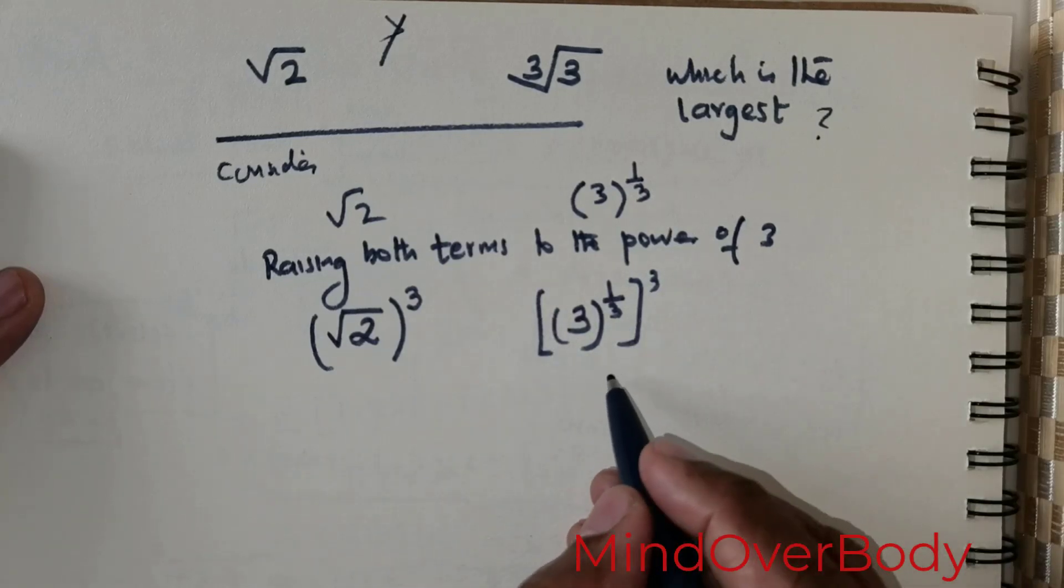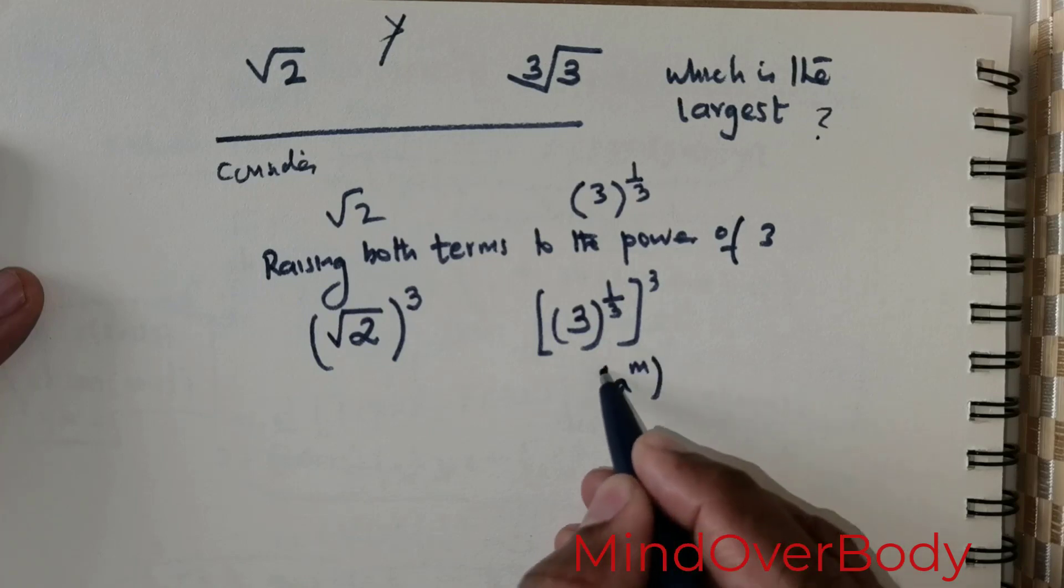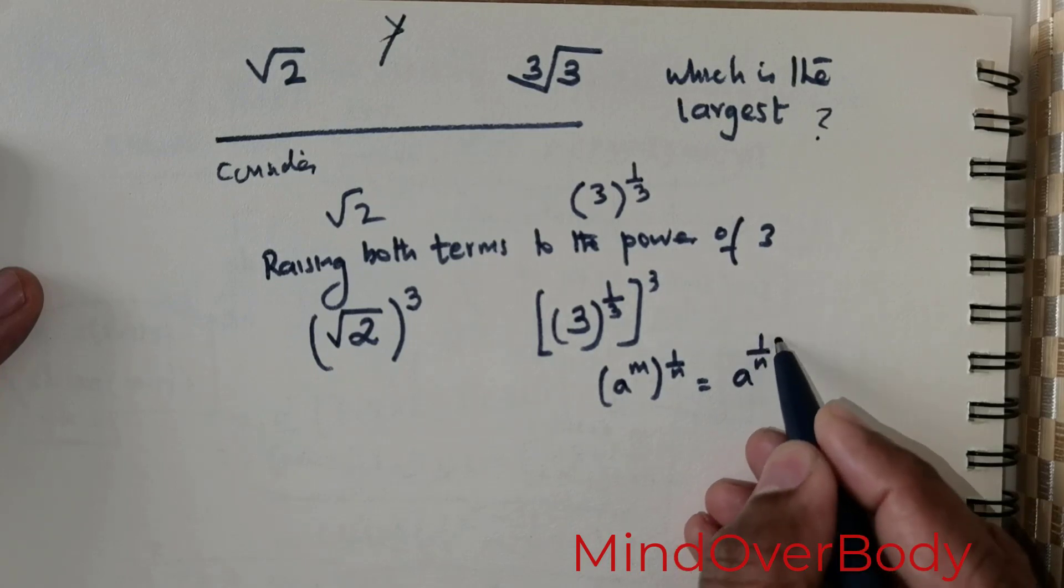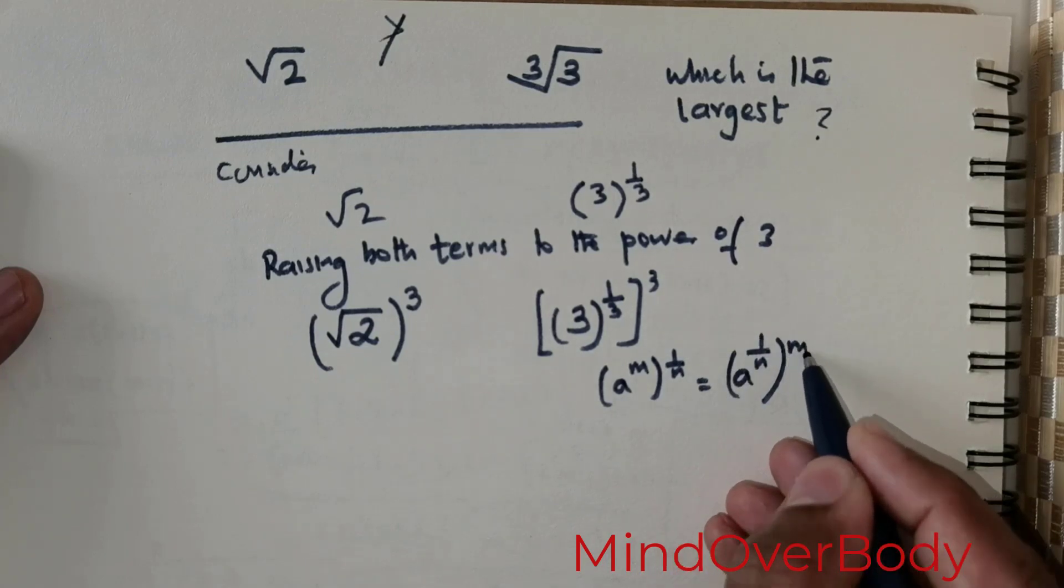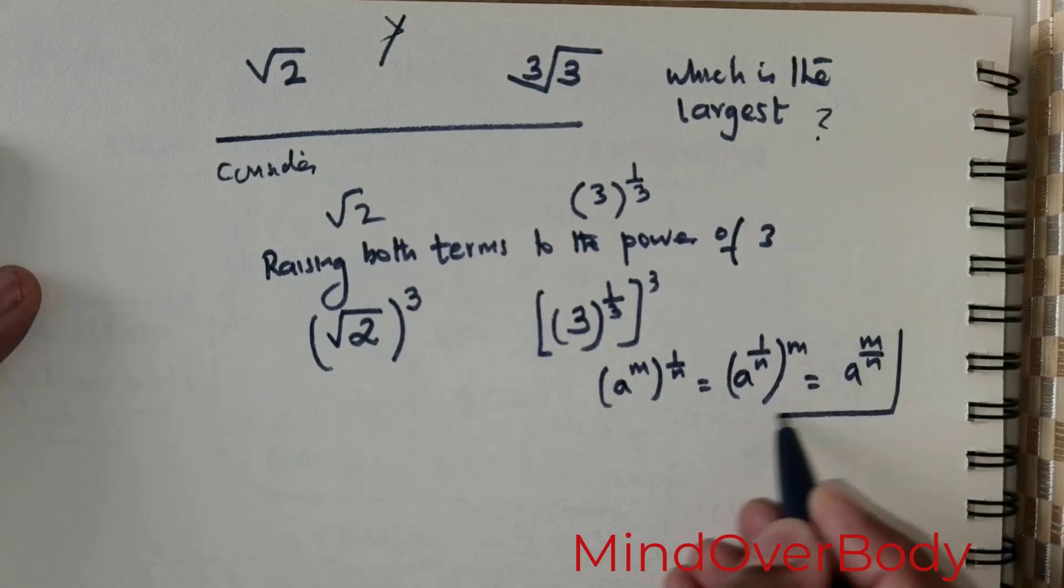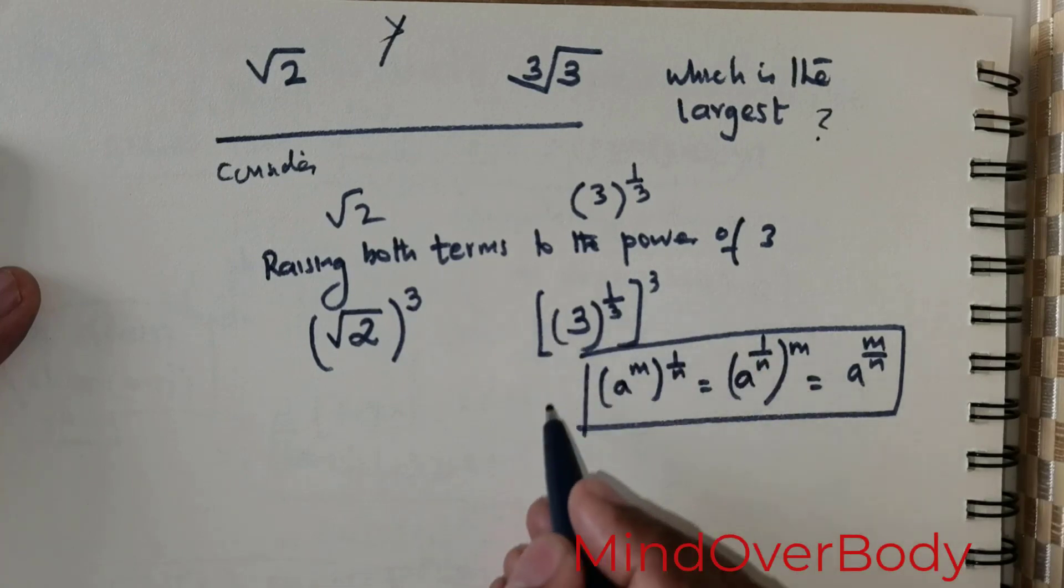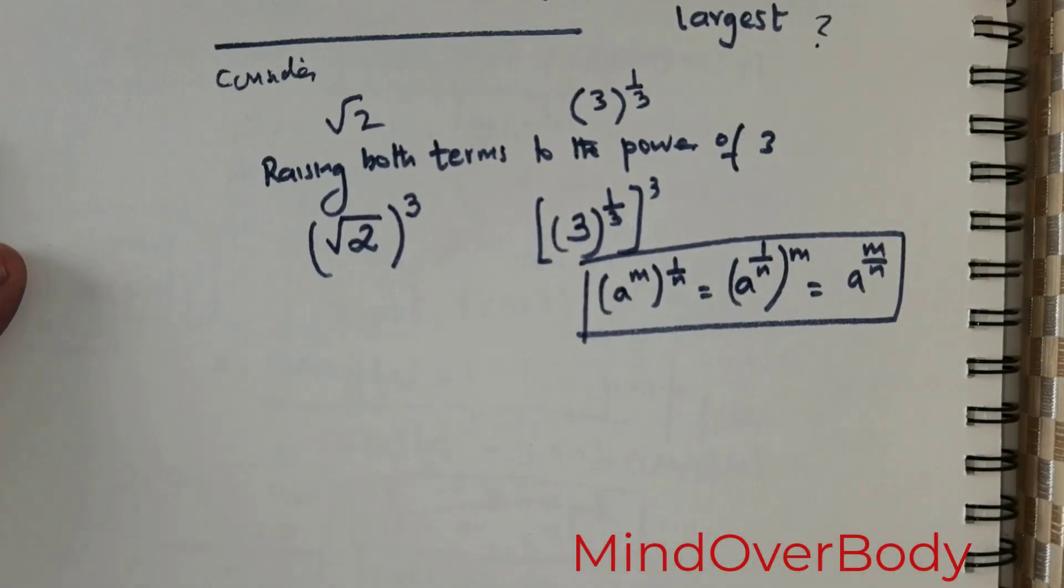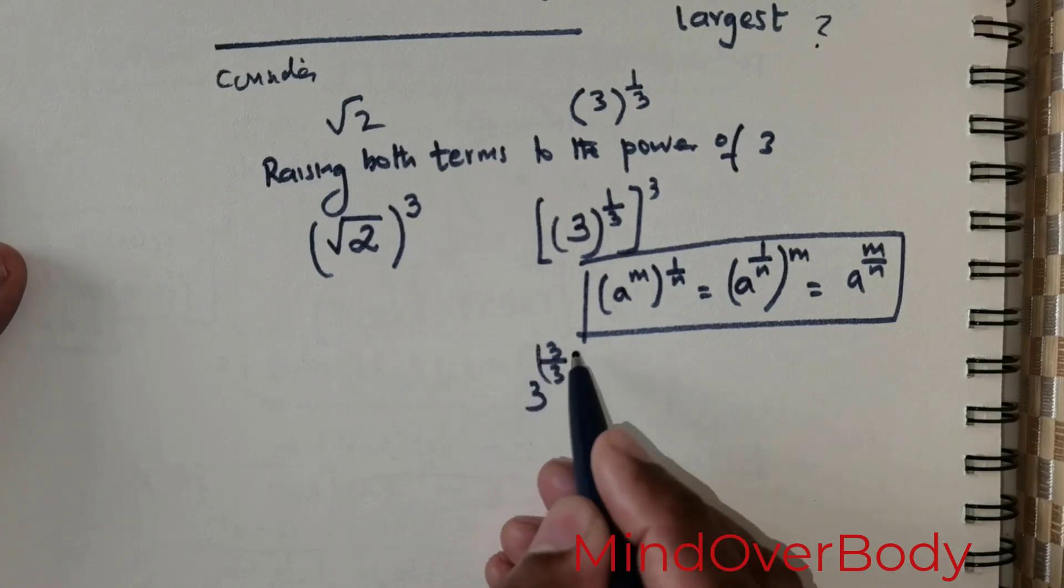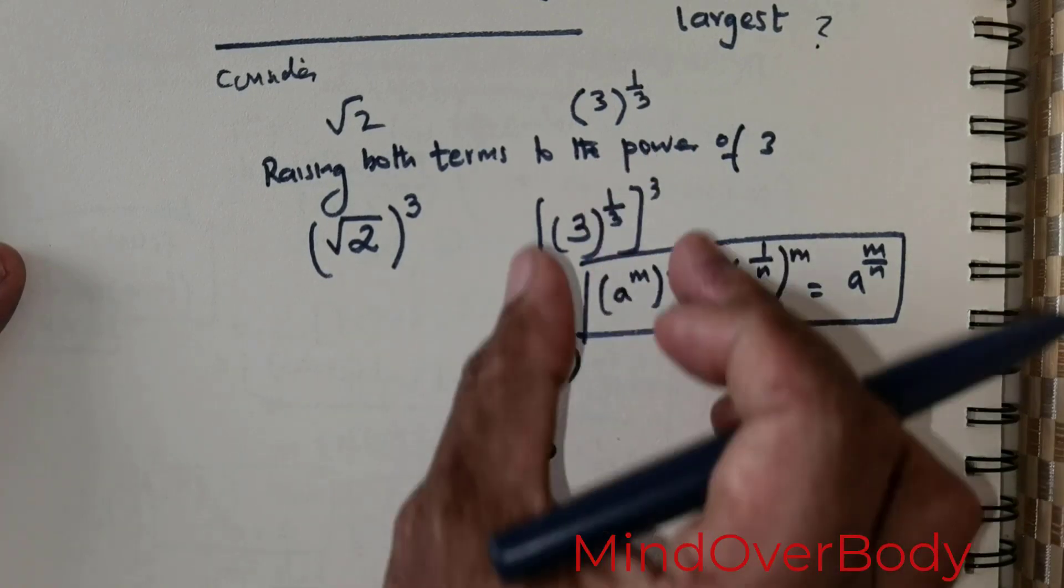Now by the law of exponents, a raised to the power m and that if it is raised to the power 1 over n is equal to a raised to the power m over n. So by this law I can rewrite this quantity as 3 raised to the power 3 over 3, where 3 and 3 can be cancelled giving me just 3.